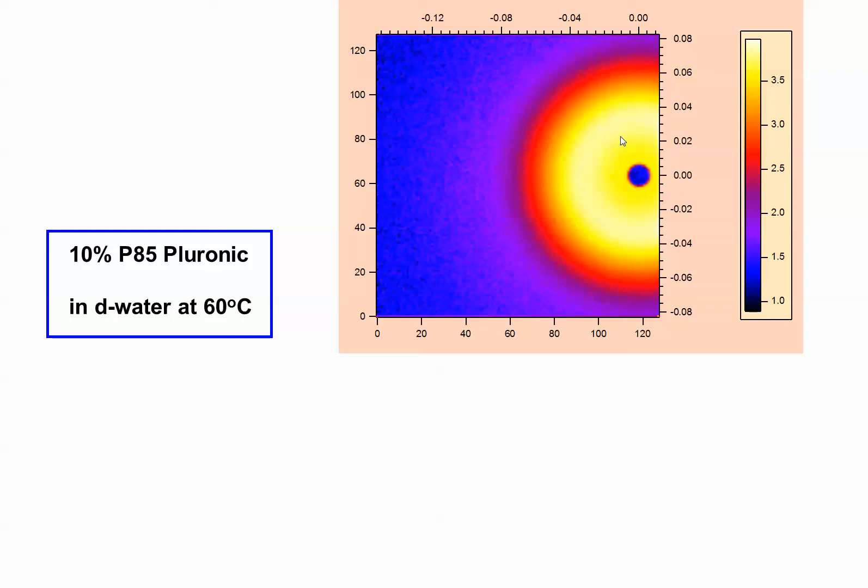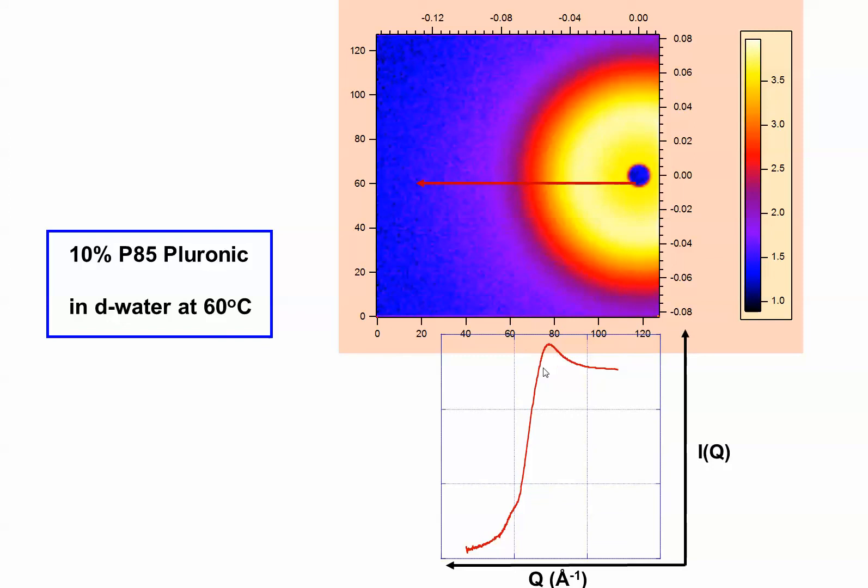10% Pluronic. These are micelles. There you go. Then, if you take a cut, you get intensity goes up and then comes down. This is a structure factor effect. This is a form factor effect. In other words, particle size. This is inter-particle effect. Just to give you a feel for what is involved.